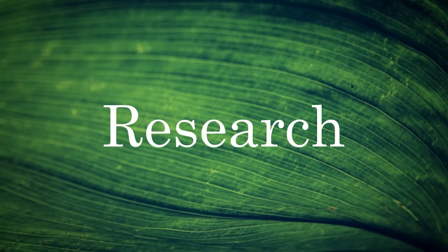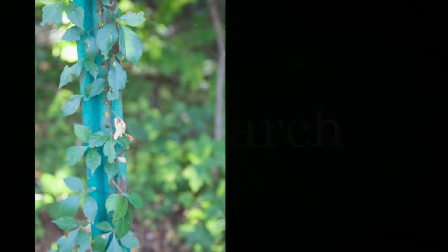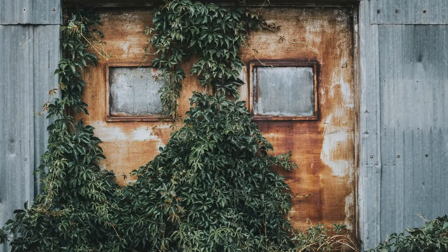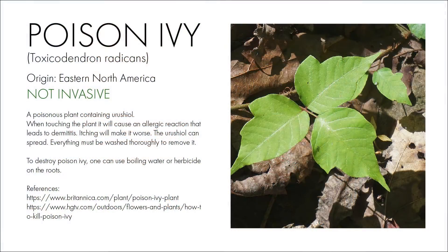The user can search for, view an image, and read about the plant. They can find out whether it is invasive and where it is native to. The app will inform the user of changes to the ecosystem if left to grow. There is a page that lists the invasive species information on the origin, a photo, what damage they do, and how to stop them from growing.